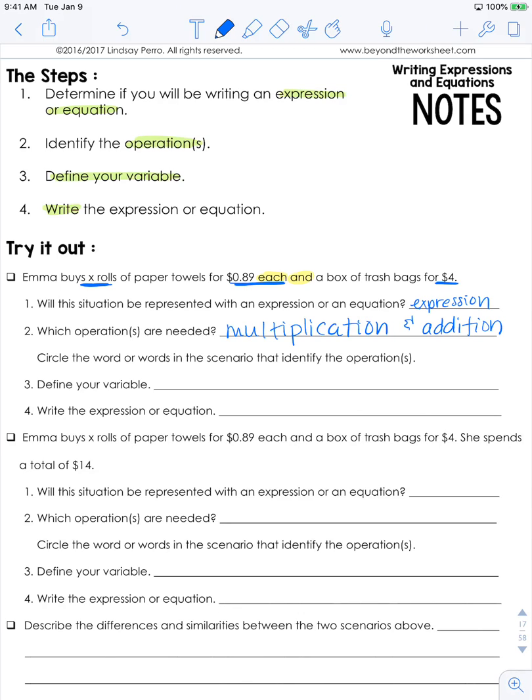Circle the word or words in the scenario that identify the operation - I just highlighted them, you could highlight or circle. Define your variable: it tells us that the variable is going to be x, but what does it stand for? It says x rolls of paper towels, so x is going to be equal to the number of rolls of paper towels. Then write the expression or equation. Paper towels are 89 cents each, she buys x - we don't know how many - and there's a plus sign, trash bags for 4 dollars. So 0.89x plus 4.